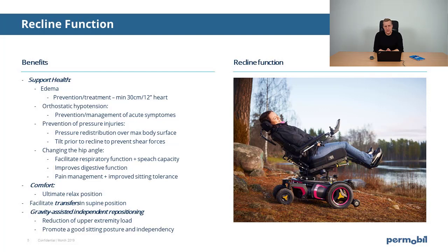The combination of tilt and recline redistributes pressure over the maximum body surface. The golden rule is to tilt 45 degrees in combination with 120 degrees of recline to achieve a 40% pressure redistribution from under the ischial tuberosities to the backrest.